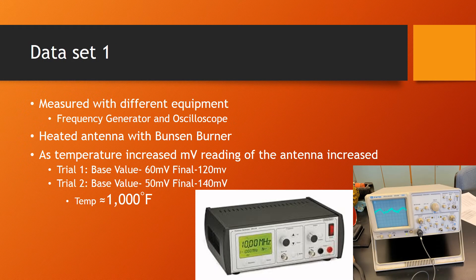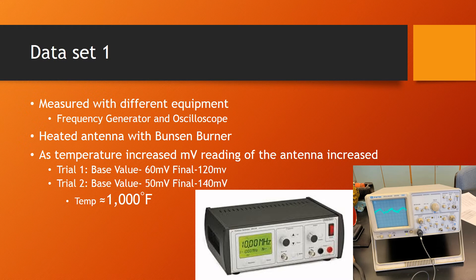My first set of data had two trials. The antenna was heated to approximately 1000 degrees Fahrenheit. My first base value was 60 millivolts, and my final value after heating was 120 millivolts. My second base value was 50 millivolts, and my final reading after heating was 140 millivolts. This shows as temperature increased, the millivolts reading increased, and the speed of the signal increased.